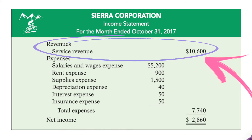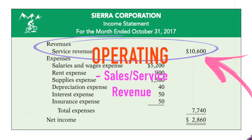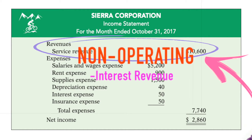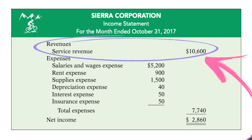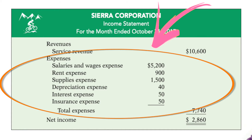The revenue section can include income earned from two different types of activities: operating activities, such as selling goods or services, or non-operating activities, such as interest revenue. Depending on the type of income statement, there may or may not be a distinction between the sources of revenues and expenses. Expenses are any relevant expenses to the business.